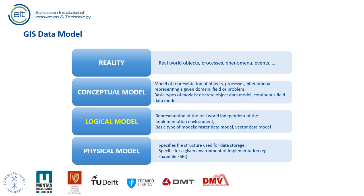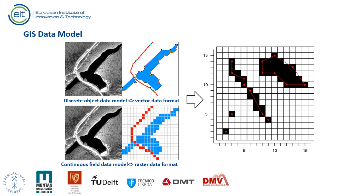At the conceptual level of abstraction we deal with the discrete object and the continuous field data models. The logical model is an implementation-independent representation of reality, where diagrams and lists describing names, behavior, and interactions between objects are developed. Finally, the physical model is the actual implementation in GIS, comprising vector and raster type files and databases. The physical model describes the exact files or databases used to store the data and the relationships between objects.